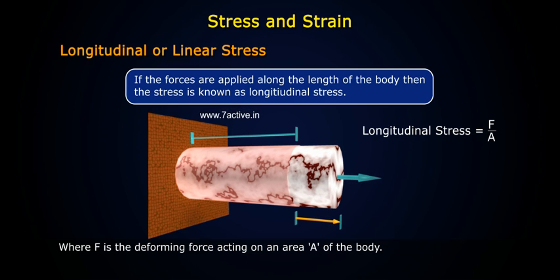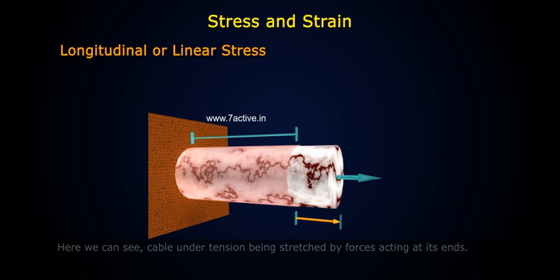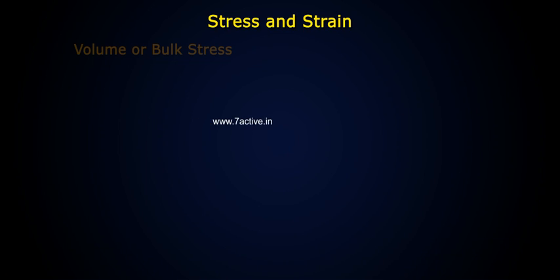Longitudinal stress is equal to F by A, where F is the deforming force acting on an area, A, of the body. Here we can see cable under tension being stretched by forces acting at its ends.